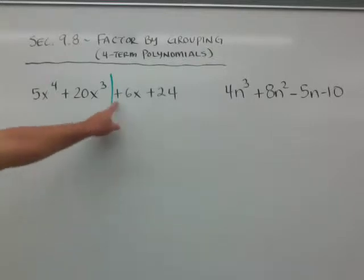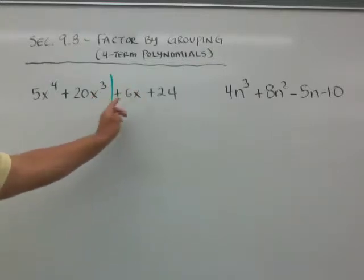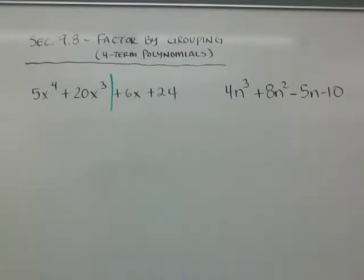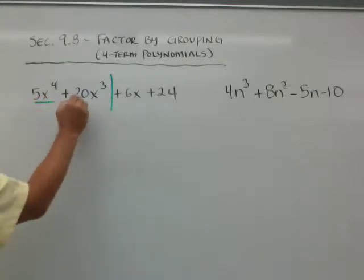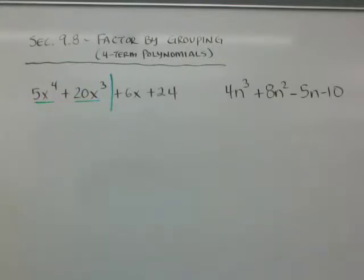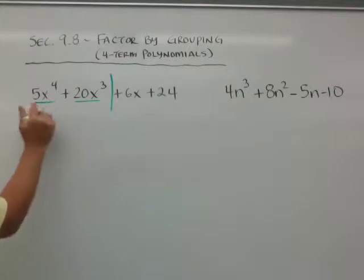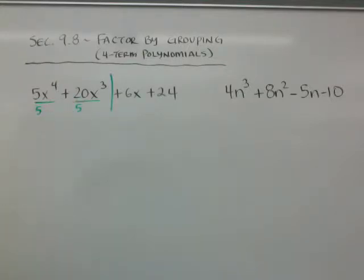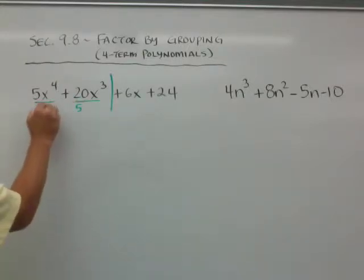Notice I left the sign to the right of the line. And what I want to do is find common factors out of these two. I can see I can pull a 5 out of both of these, and I can pull an x cubed out of both of them.